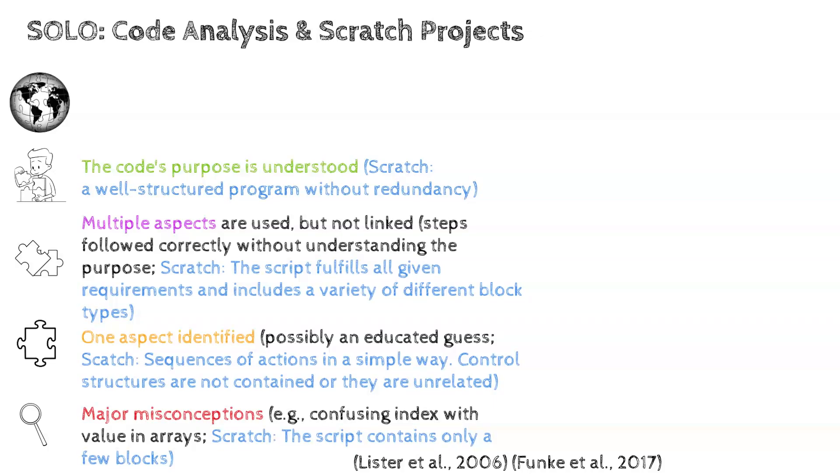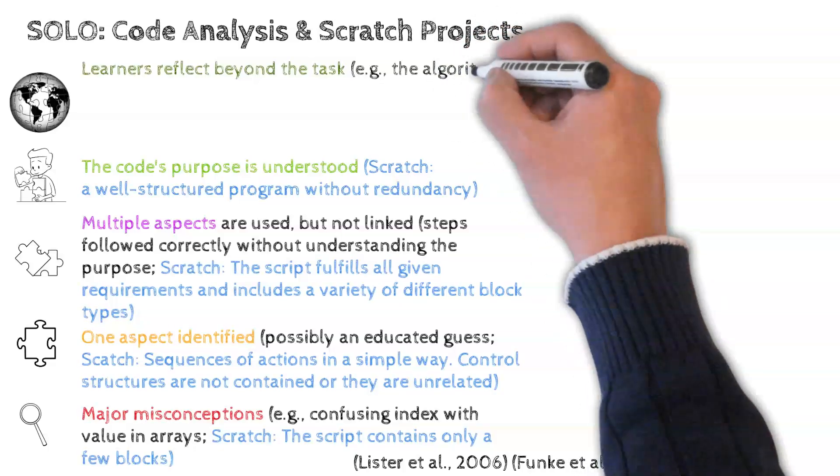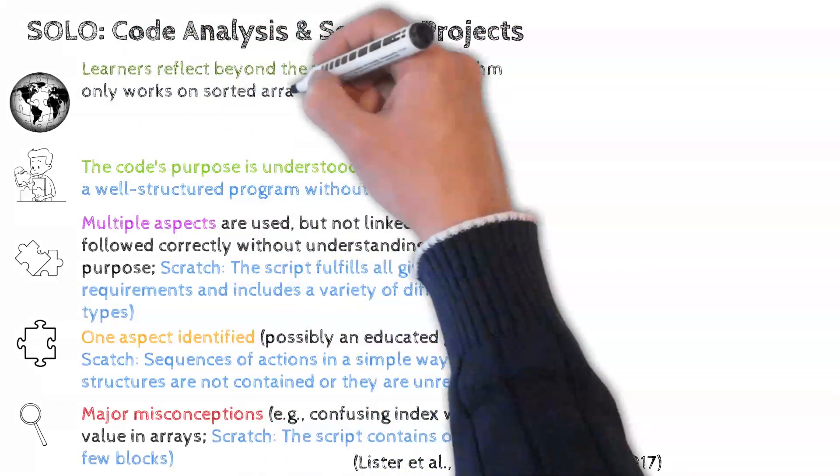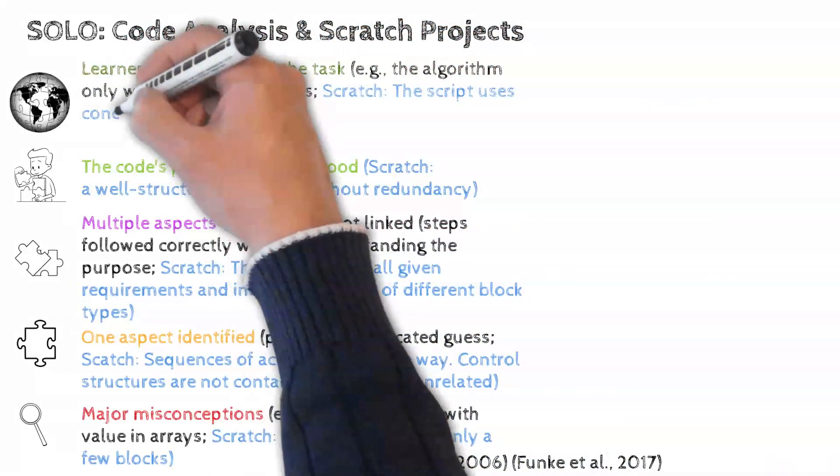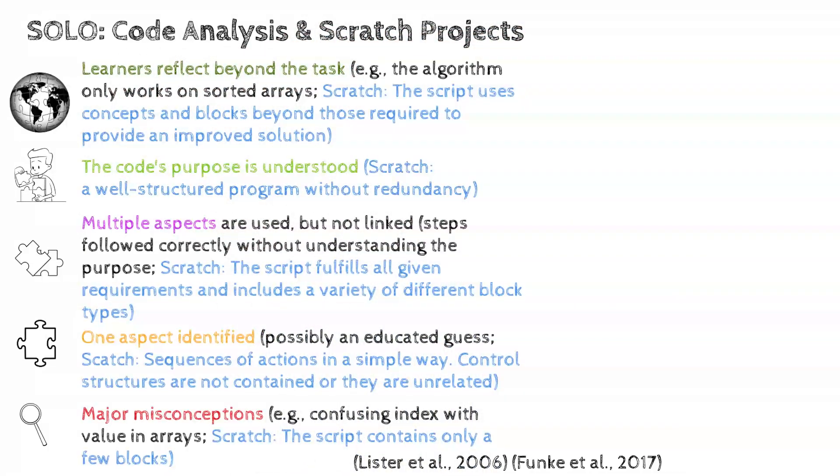At the highest level, Extended Abstract, learners reflect beyond the task, recognizing limitations. For example, the algorithm only works on sorted arrays. And regarding Scratch, the Scratch script uses concepts and blocks beyond those required in the exercise to provide an improved solution.